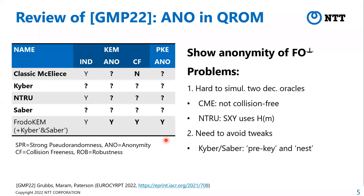Unfortunately, we know nothing about anonymity of the four finalists. The problem is roughly that we need to simulate two decapsulation oracles and decryption oracles. For Classic McEliece, the obstacle is that it is not collision-free. For NTRU, it uses SXY, which uses H(m) to generate the key — this is an obstacle to applying their techniques. Additionally, tweaks of FO in Kyber and Saber are obstacles to showing their anonymity, and even their IND security. So according to this table, we know nothing about the anonymity of the four NIST PQC finalists.